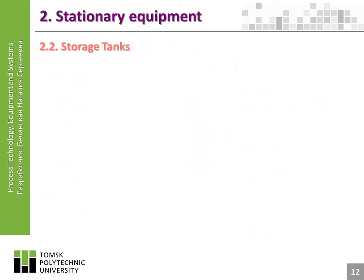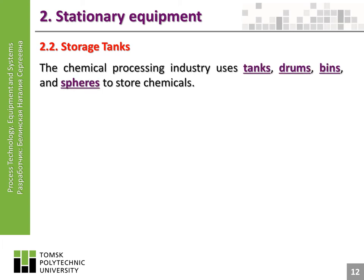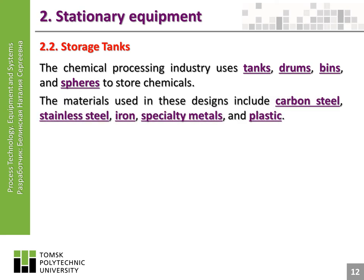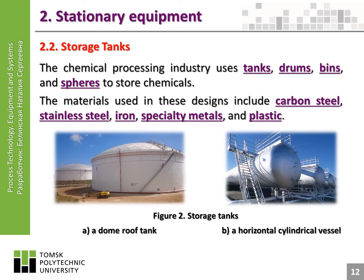Storage tanks: the chemical processing industry uses tanks, drums, bins, and spheres to store chemicals. The materials used in these designs include carbon steel, stainless steel, iron, specialty metals, and plastic. In the pictures you can see storage tanks such as a dome roof tank and a horizontal cylindrical vessel.